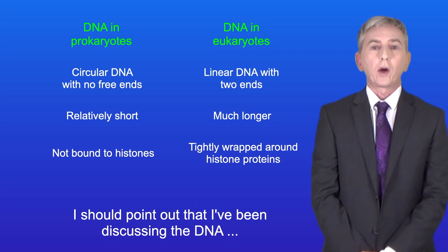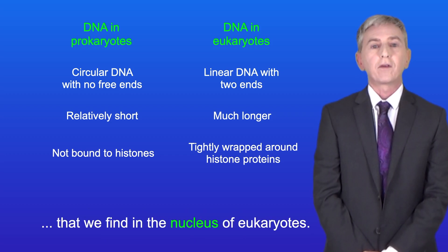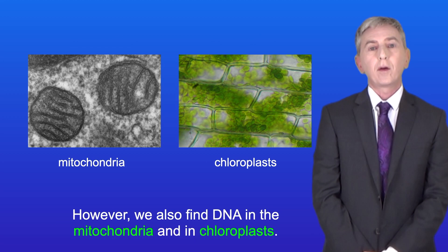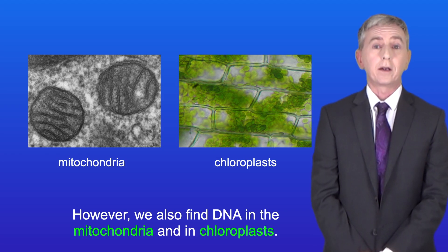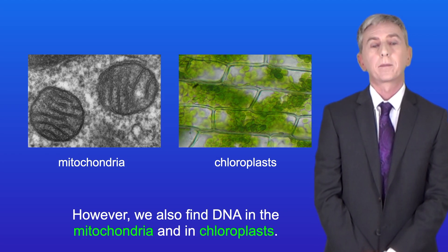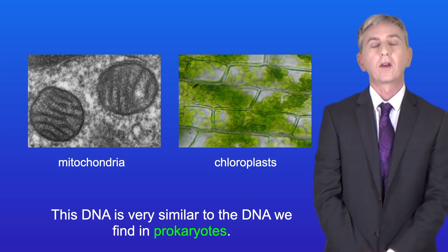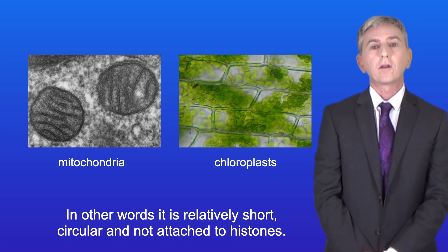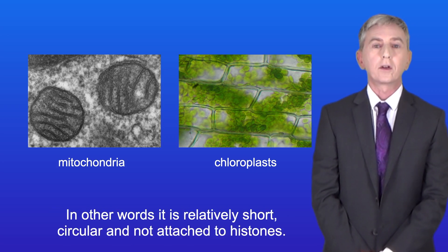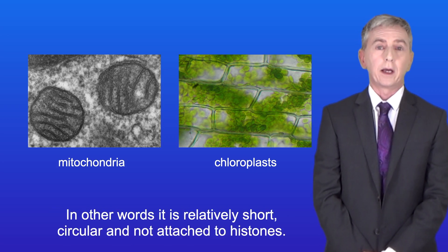I should point out that I've been discussing the DNA that we find in the nucleus of eukaryotes. However we also find DNA in the mitochondria and in chloroplasts. This DNA is very similar to the DNA we find in prokaryotes — in other words it's relatively short, circular, and not attached to histones.